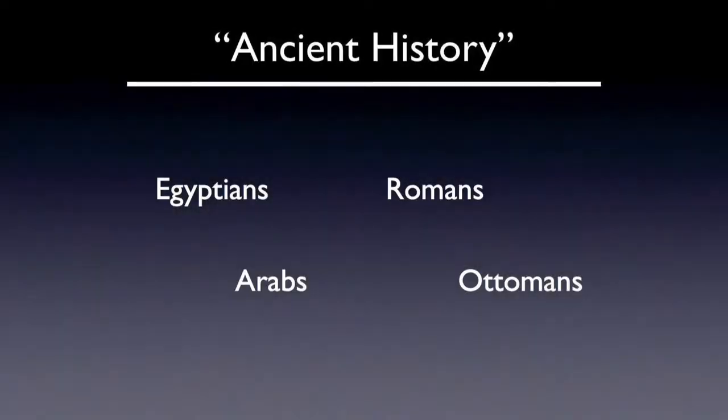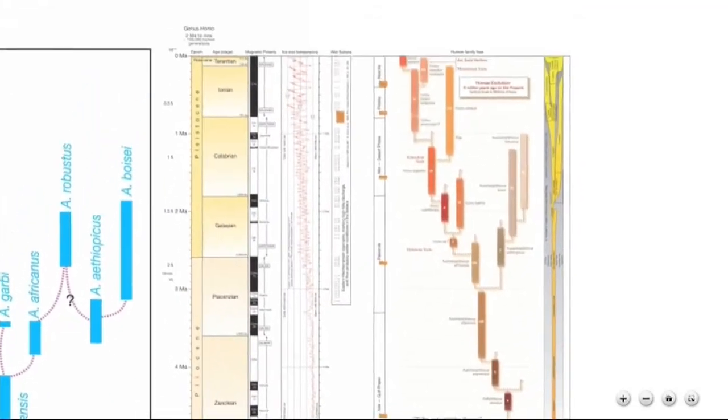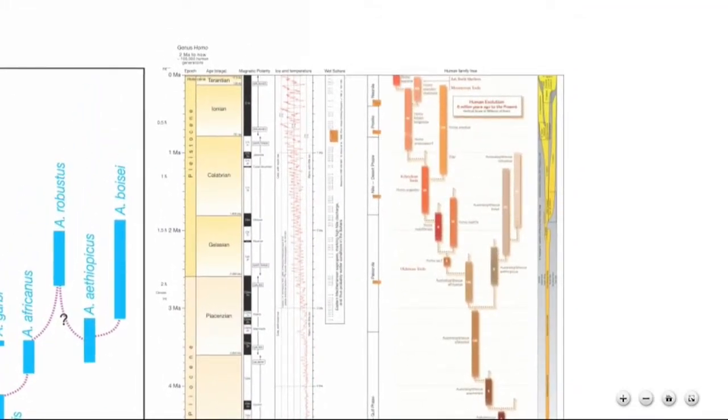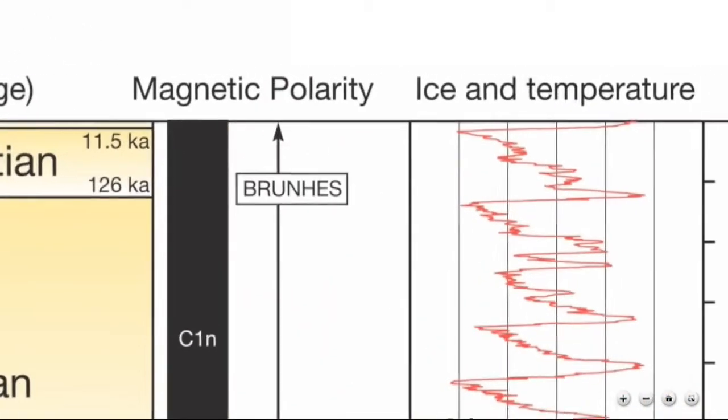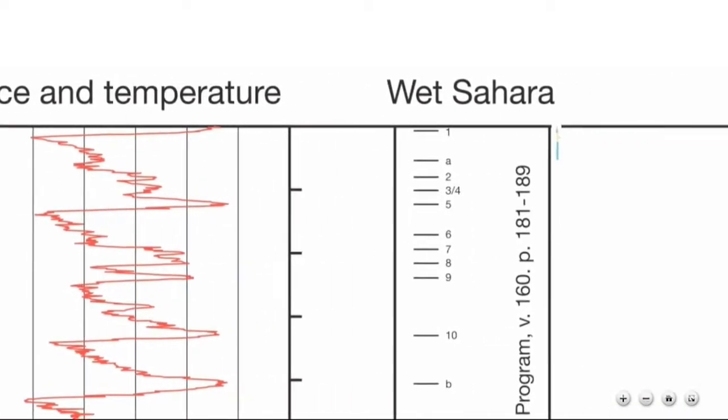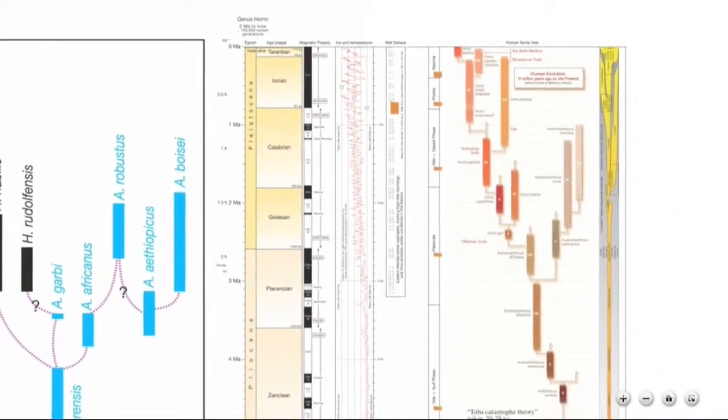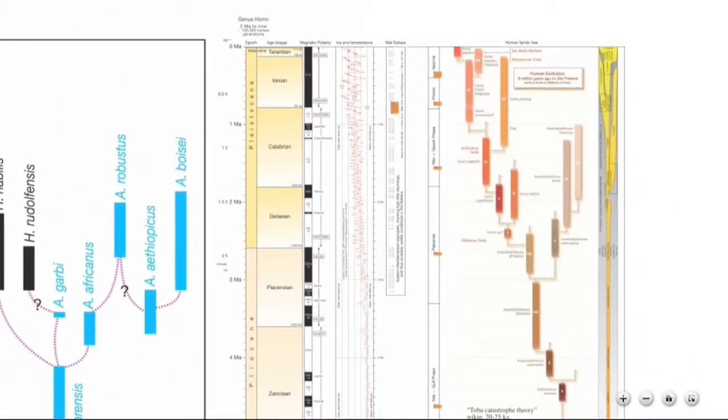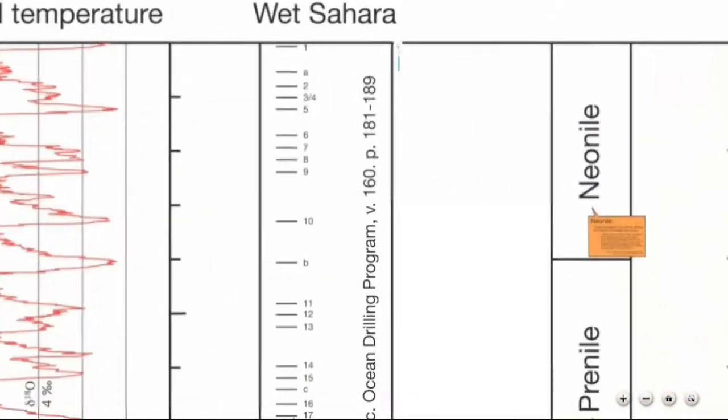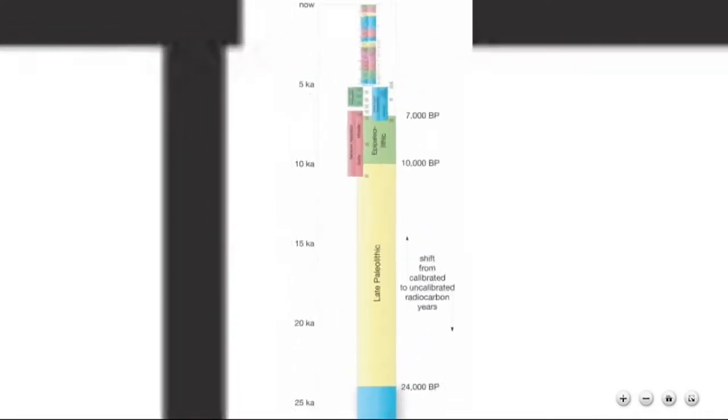But where do things like Egyptians and Romans, which many of us consider to be ancient history, fall on the timescales? This box shows the past 5 million years in greater detail. Here we can see data on the Earth's magnetic polarity, the temperature of the planet, and even the time periods when the Sahara Desert was wet or dry. If we zoom closer, we can see the past 50,000 years. And finally, the past 5,000 years.